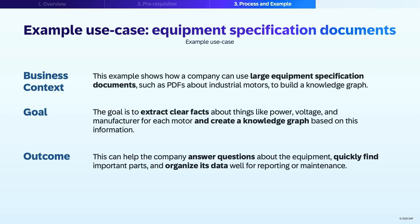Let's start with the use case. This example shows how a company can use large equipment specification documents, such as PDFs about individual industrial motors, to build a knowledge graph. The goal is to extract clear facts about things like power, voltage, and manufacturer for each motor and create a knowledge graph based on this information.